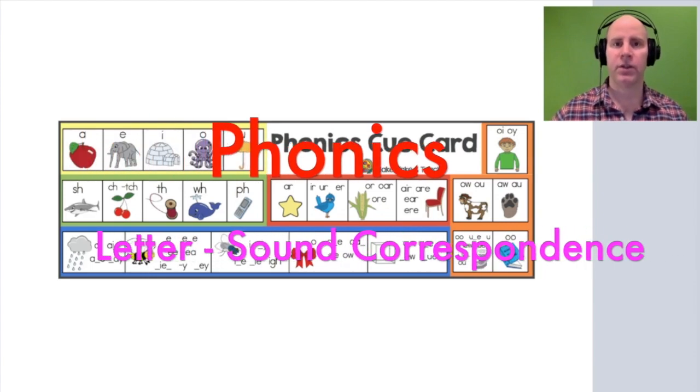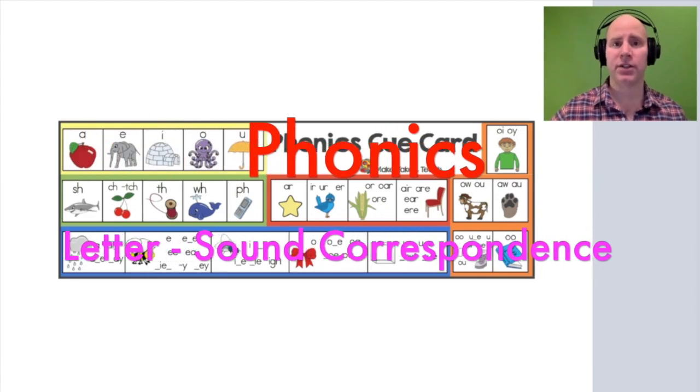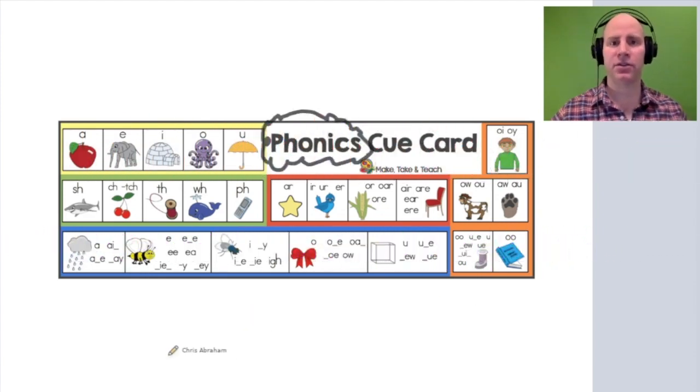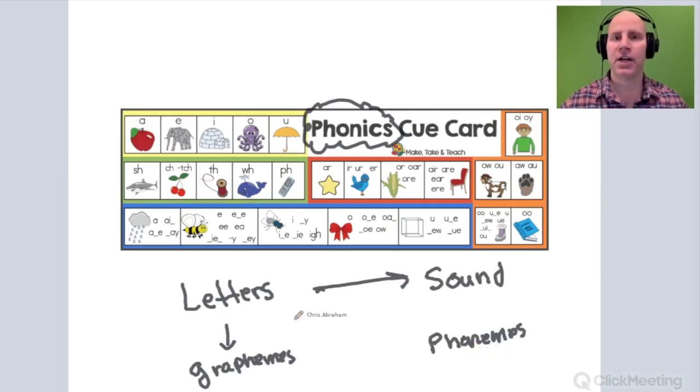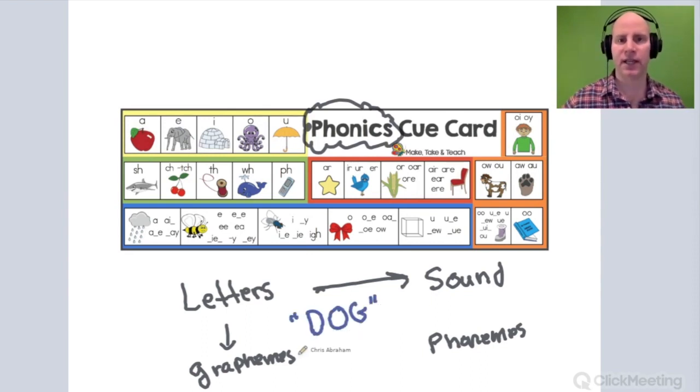When we think about phonics, I want you to think phonics has to do with letter-sound correspondence. It's linking those letters or graphemes with sound to correctly pronounce a word. A child that comes across the word dog in print, if they were a beginner reader, they'd start by taking each of these letters or graphemes and matching them up with their corresponding predictable sounds. So when they do that and then blend it back together, they've correctly pronounced and hopefully identified the word.